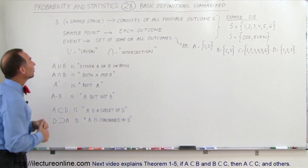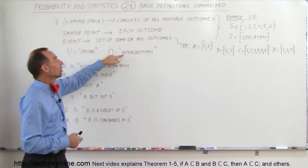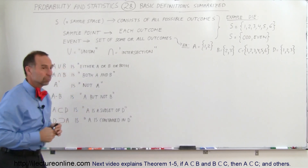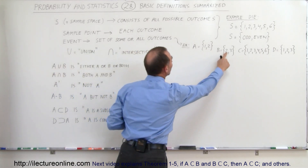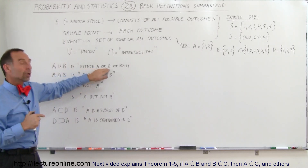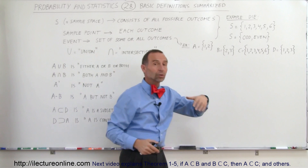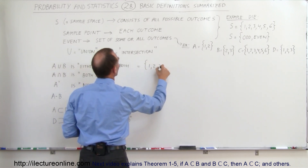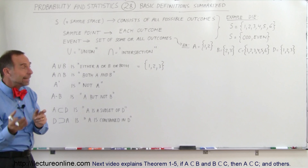Now we have some symbols. The symbol U is called union, and the U upside down is intersection. If we have A union B — event A contains outcomes one and two, event B contains outcomes two and three — then the union of A and B means all the outcomes that either belong to A, belong to B, or belong to both A and B. So one, two, and three all belong to either A, B, or A and B combined. Therefore A union B equals one, two, and three.